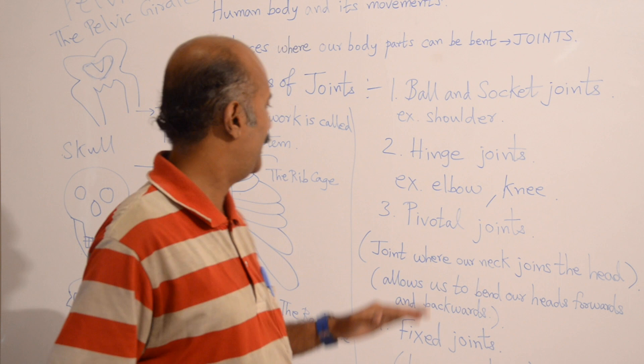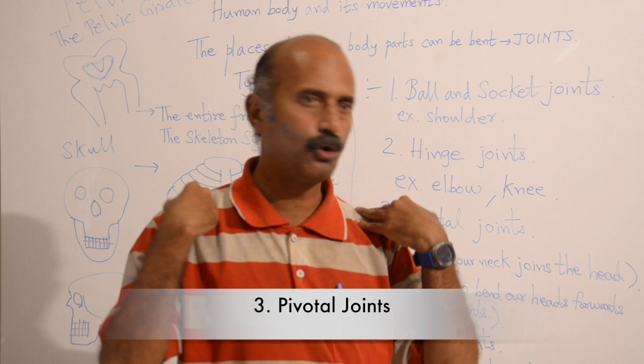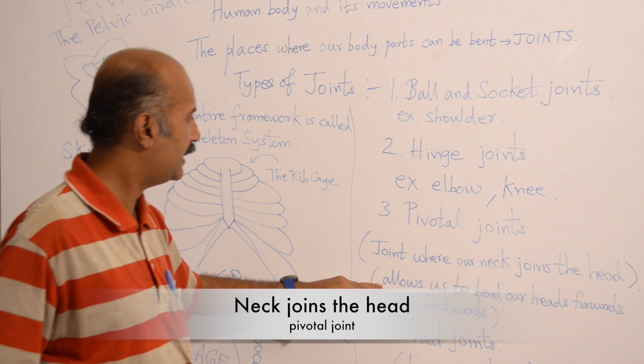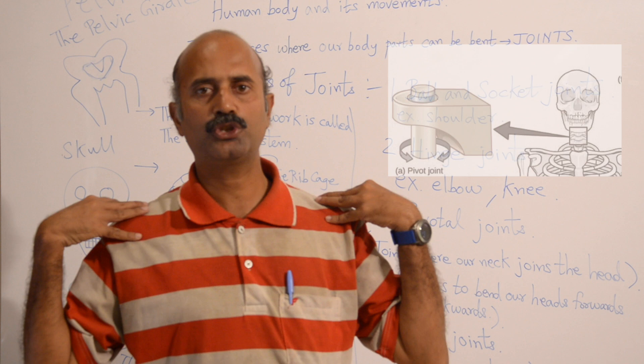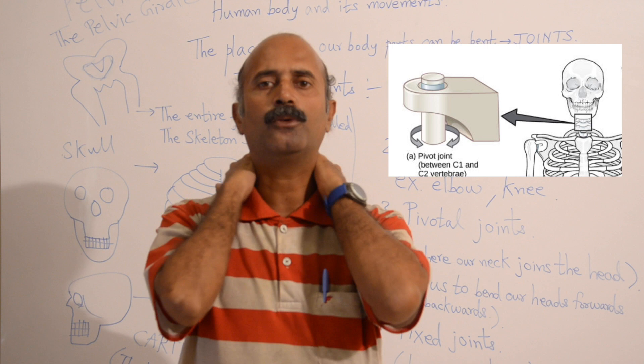Now, pivotal joints. A pivotal joint is a joint where our neck joins the head. It allows us to bend our heads forwards and backwards. The head connects to the neck at this pivotal joint.